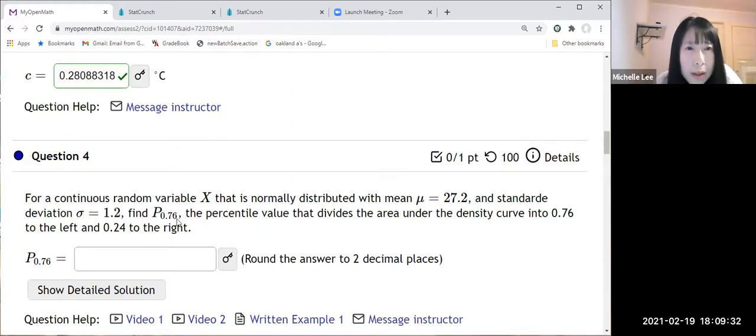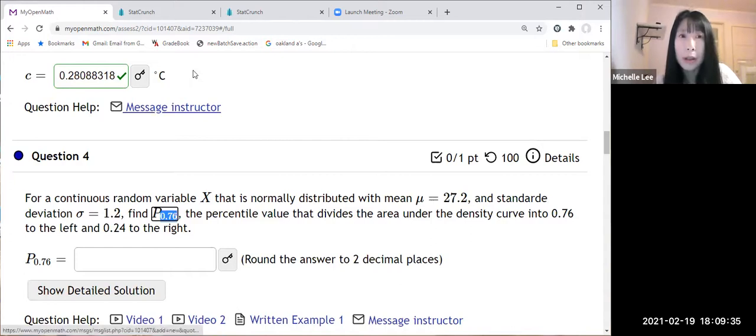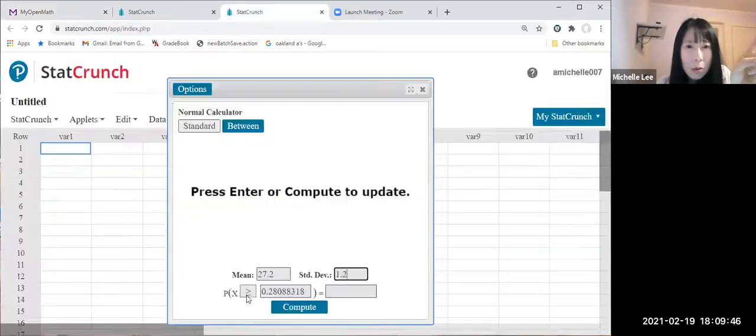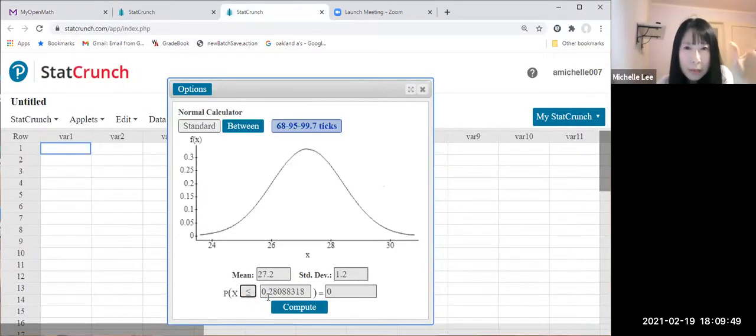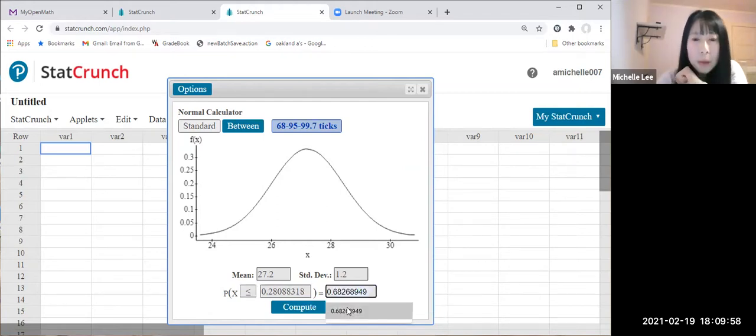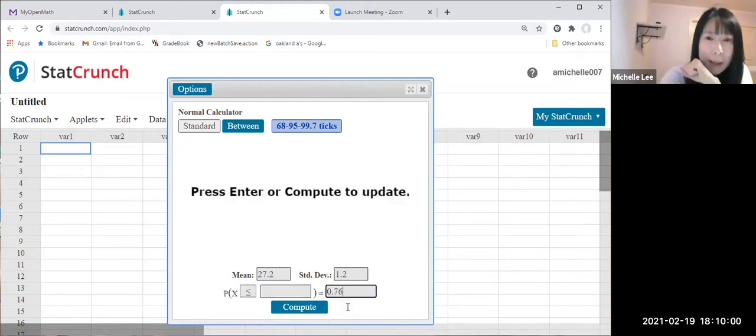Percentile 0.76, means the probability which is from 0 to 76 percentile. So I'm going to make a less than or equal to 76 percentile, means the 76 percent. So this will be 0.76. Then we are looking at the variable, compute.